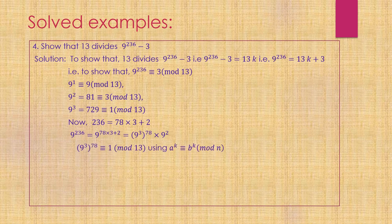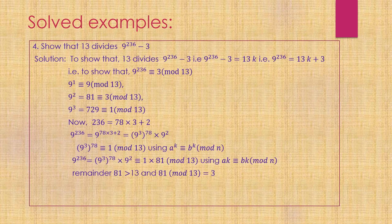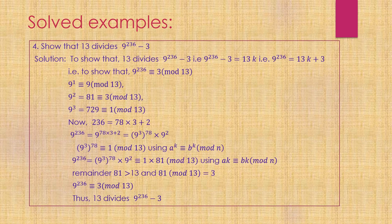So 9^236 equals (9^3)^78 times 9^2. Now (9^3)^78 is congruent to 1^78 equals 1 modulo 13. Therefore, 9^236 is congruent to 1 times 81 equals 81 modulo 13. Now 81 modulo 13 equals 3. So 9^236 is congruent to 3 modulo 13. Thus, 13 divides 9^236 minus 3. If we had plus 3 or plus 5 instead of minus 3, we would need to work with negative remainders.